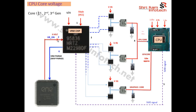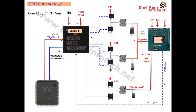If the VR_ON signal is present but the core voltage is still not coming, perform a cool test — check whether all the MOSFETs are working correctly using a multimeter. Remove the processor and check for short circuits: set the multimeter to buzzer mode, connect the ground probe to ground and the positive probe to the coil. The resistance should be high. If it shows low resistance like 1 or 2 ohms, or the buzzer sounds, there is a short circuit that must be removed.